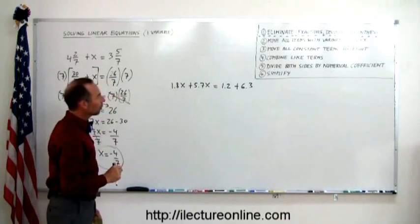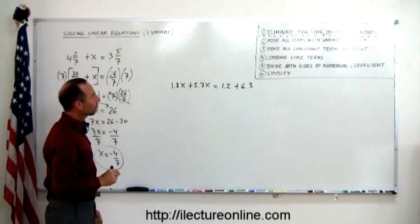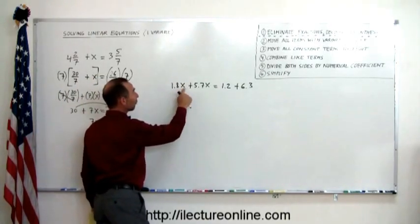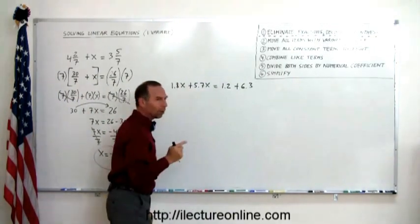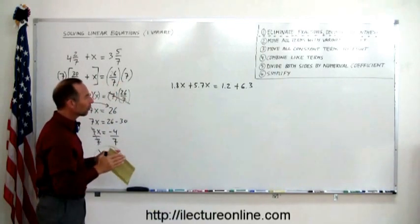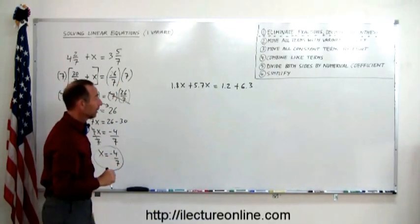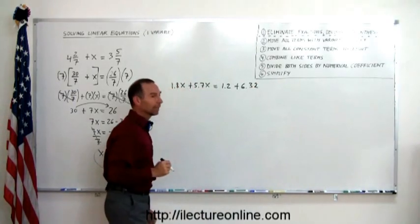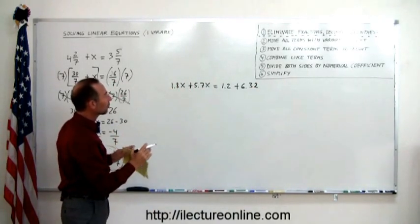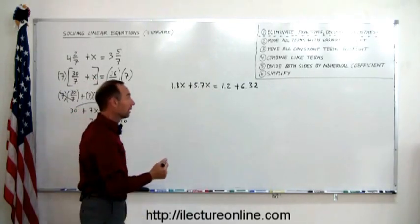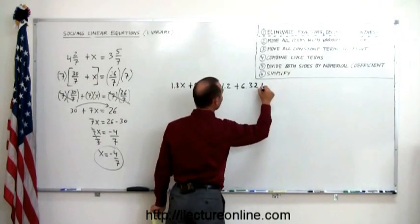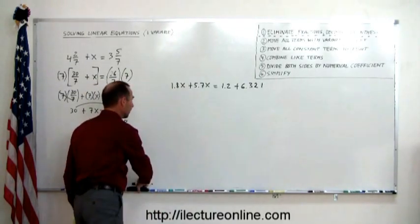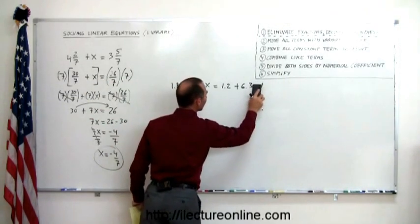So you look at all the terms, and you find the term that has the most decimal places, the most numbers behind the decimal. But in this case, they all just have one. And if they all just have one, that means you're going to multiply both sides of the equation by 10. If you found, for example, that one of these had a second decimal place, then you want to multiply both sides of the equation by 100. Let's say that one of them had a third decimal place, then you want to multiply both sides of the equation by 1,000. In this case, let's keep it simple.